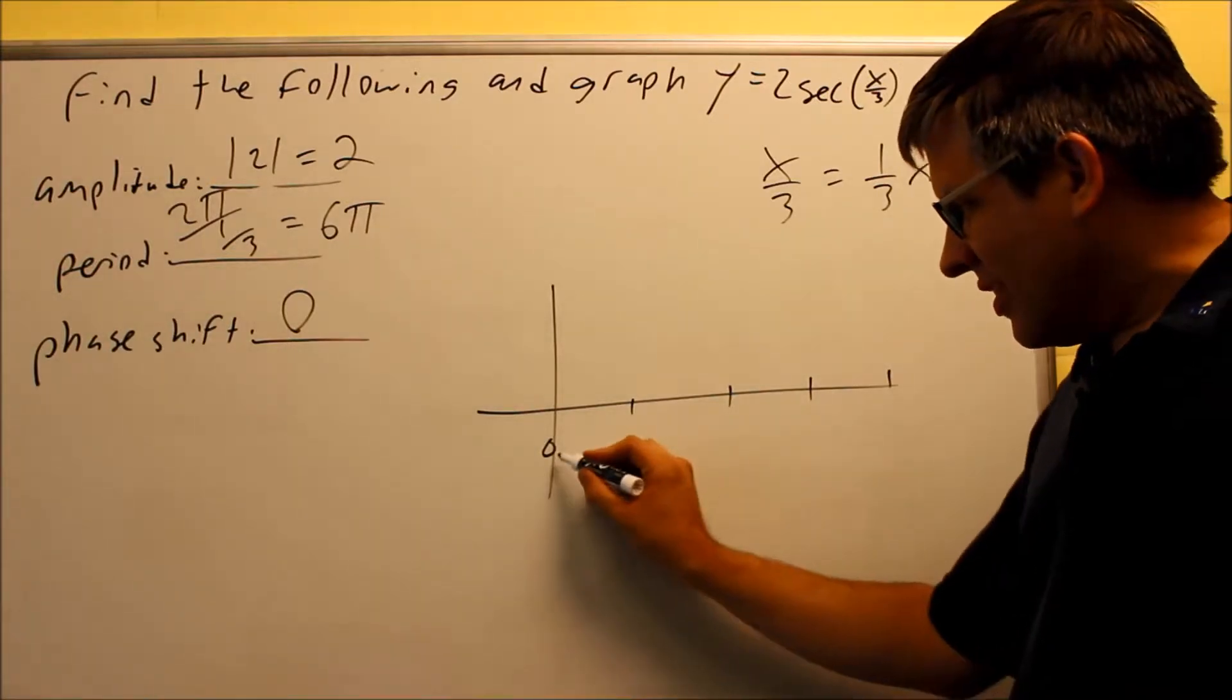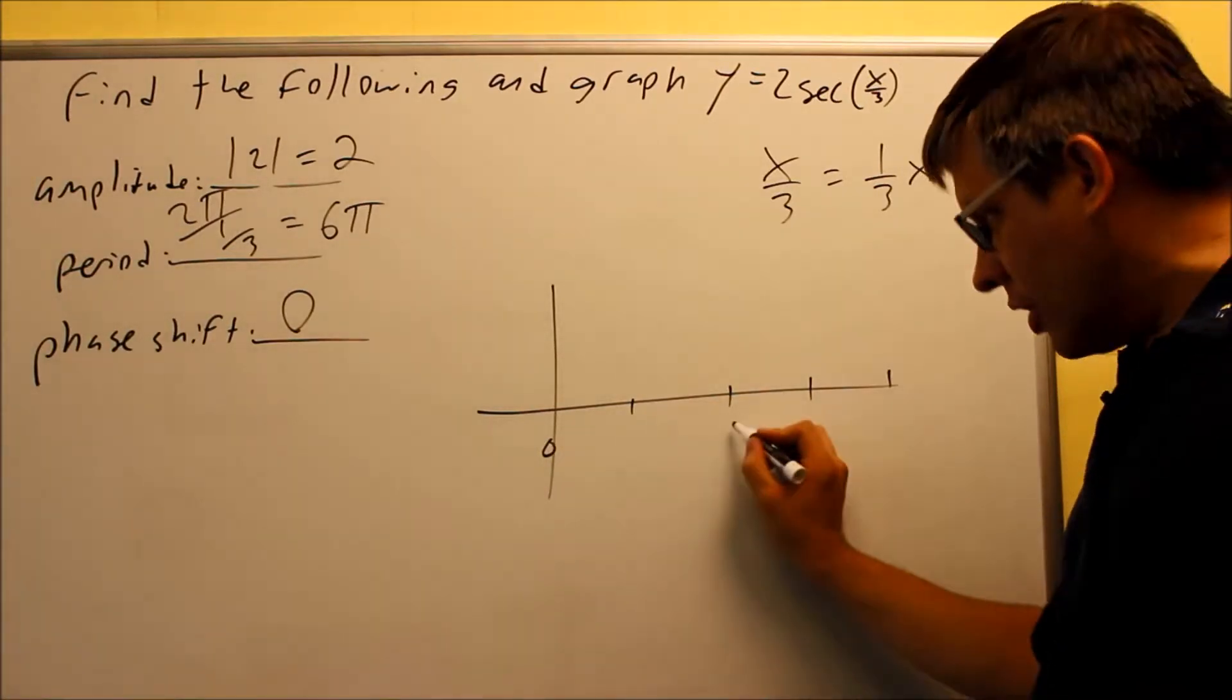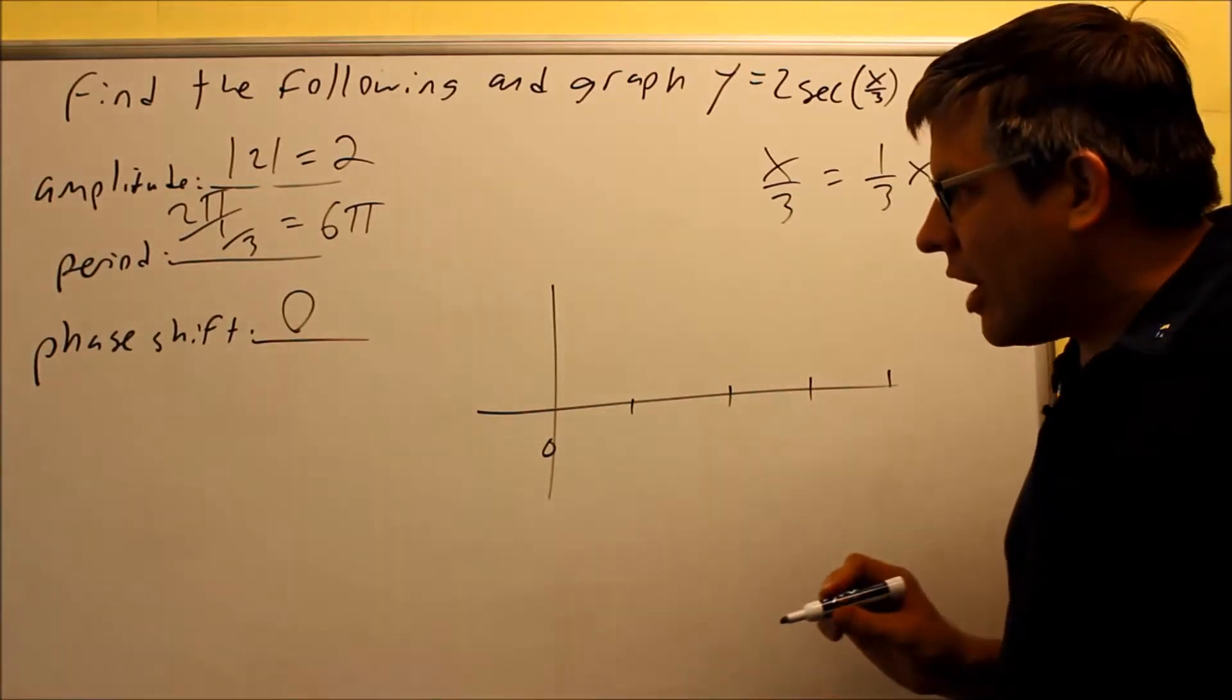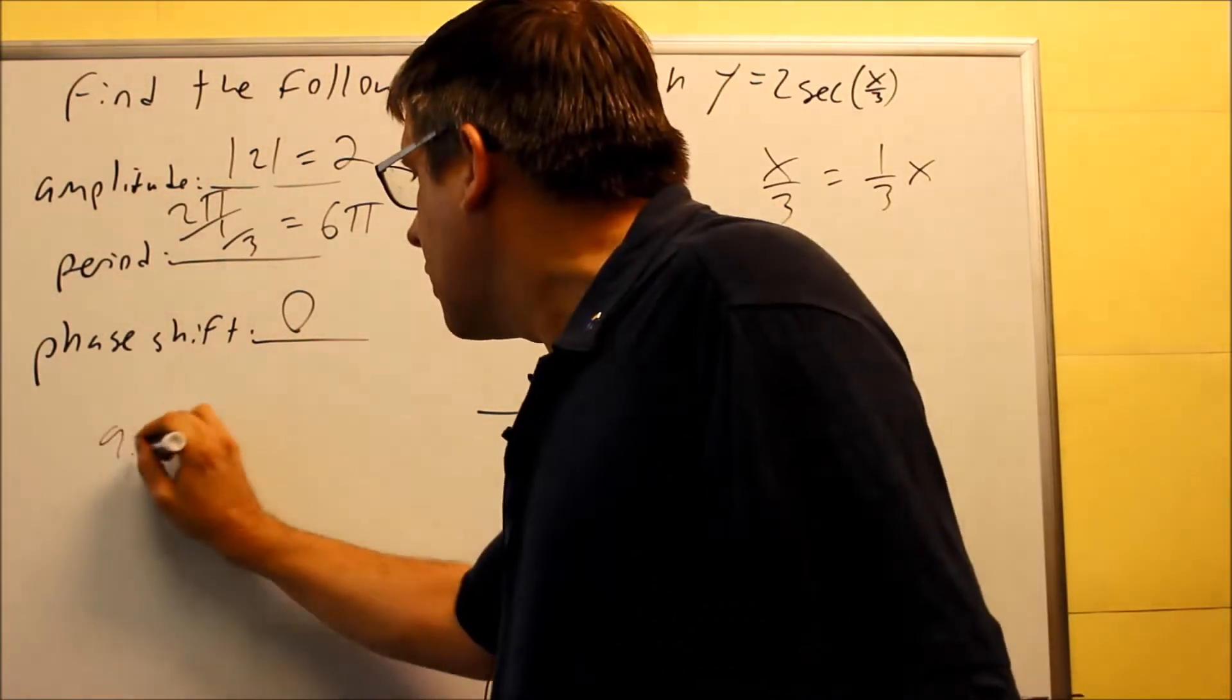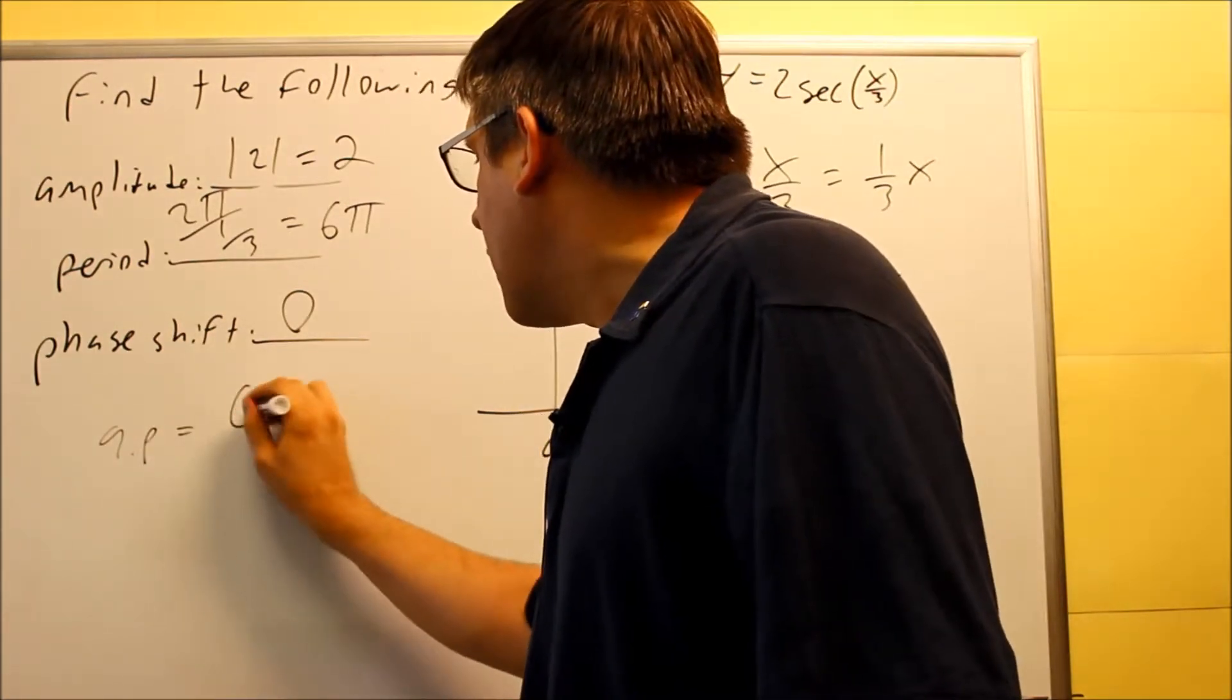So quarter point would be the distance from 0 over to here and from here to here and so forth. You find that, we did this in the previous section, your quarter point, your QP, is equal to your period divided by 4.